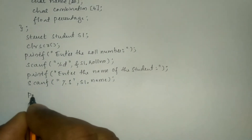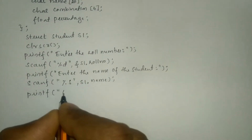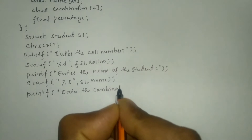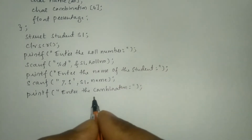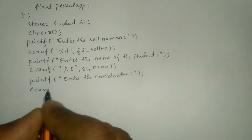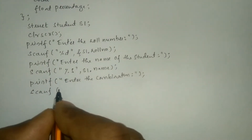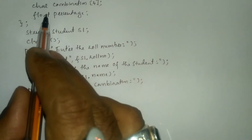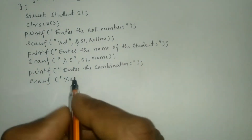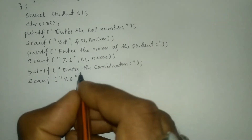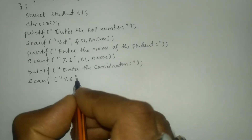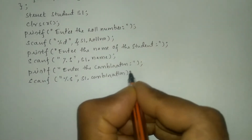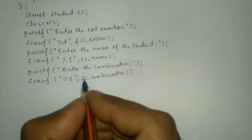Next is combination, so we will ask the user to enter the combination. In a printf statement I'll write enter the combination, end the double quotation mark and put semicolon. Use scanf statement to receive the input. Here I'm going to write %s because we have taken combination as character type of data. So end the double quotation mark, comma s1 dot combination, close the bracket and put semicolon.